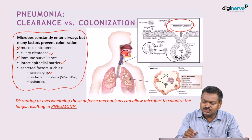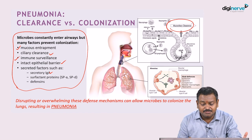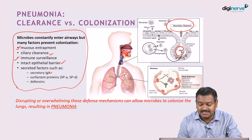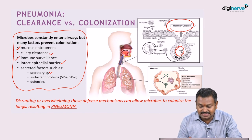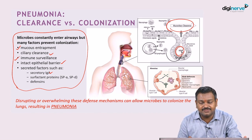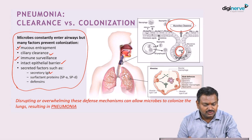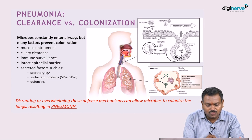Mucosal cilia, defensins, mucosal macrophages, and secretory IgA all prevent infection. Within the alveoli, alveolar macrophages handle bacteria that enter, while alveolar type 1 and type 2 cells secrete opsonizing factors, surfactants, and various inflammatory mediators that prevent bacterial colonization.